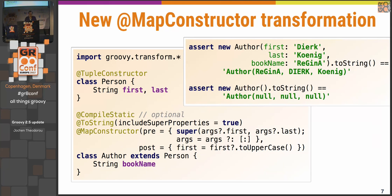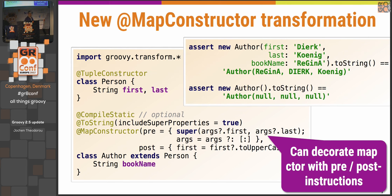There is also a @MapConstructor. You use it similarly to the tuple constructor, but it follows map logic — you can give in first name, last name, book name and such things, using almost the same syntax as maps in Groovy. The new part is that you can now provide pre-constructor code that would normally go into the constructor itself. So you don't have to write a constructor, and you can have multiple constructors that all contain this code without repeating yourself or delegating to each other.